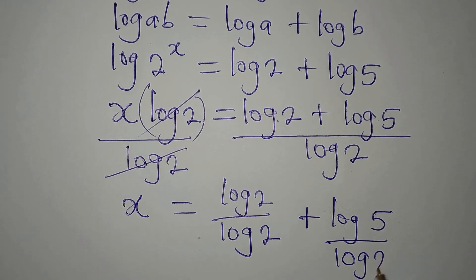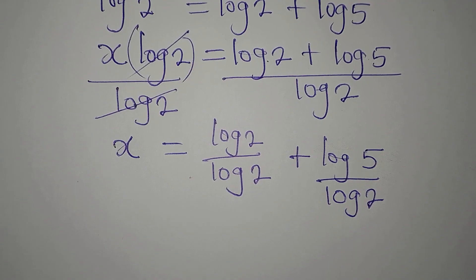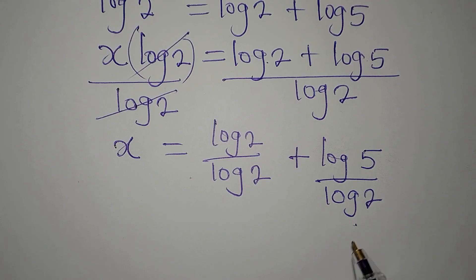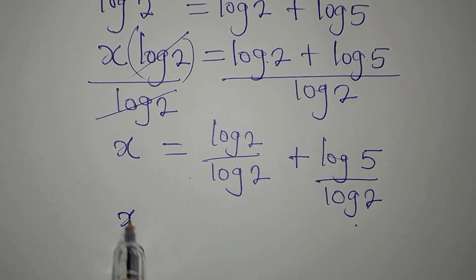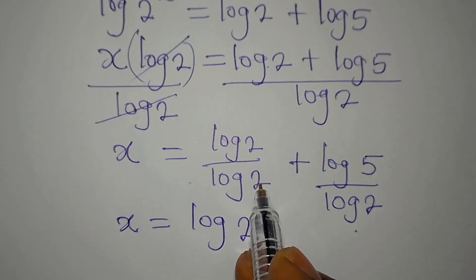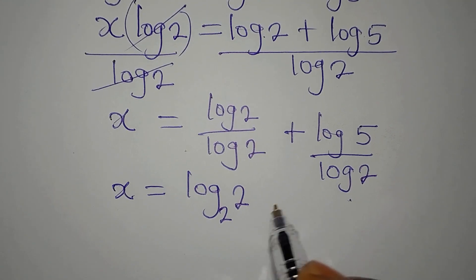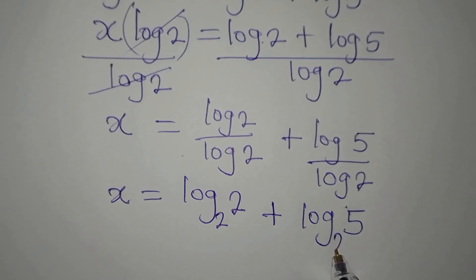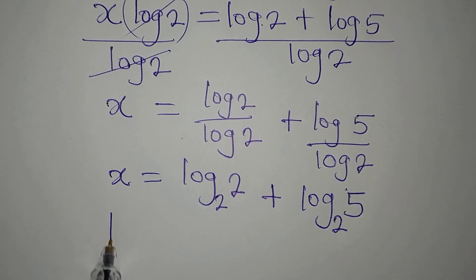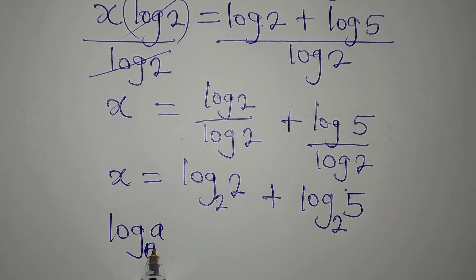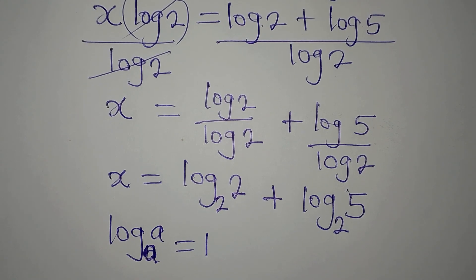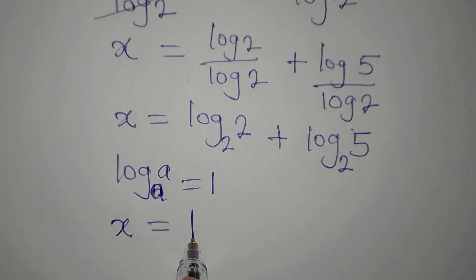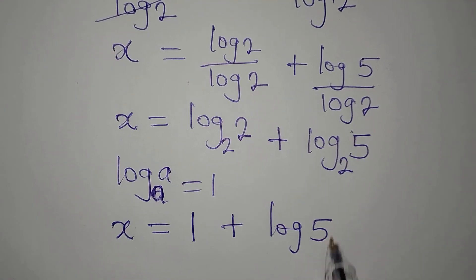Now we apply the change of base rule. Since log2/log2 both share the same base, and log5/log2 both share the same base, we can write: x equals log₂2 plus log₂5. And since log of a number to its own base equals 1, log₂2 equals 1. So x equals 1 plus log₂5.